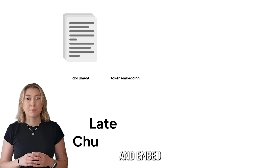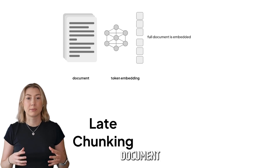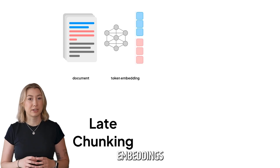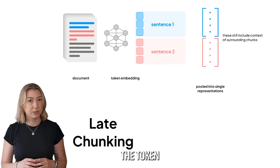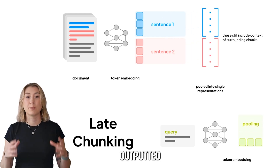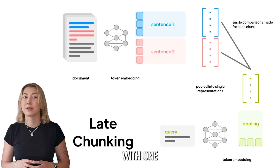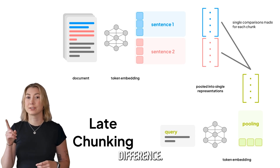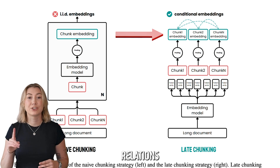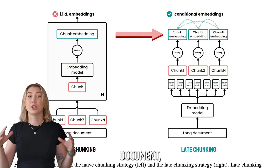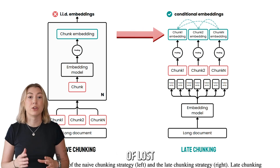We can first tokenize and embed the entire document using a long-context document embedding model, and then chunk the token embeddings instead of the text itself. Finally, we pool the token representations, resulting in output chunks super similar to our naive chunking method — with one difference. Because we embedded the document first, our resulting chunks now have relations from the full document, meaning we no longer have the previous problem of lost context.